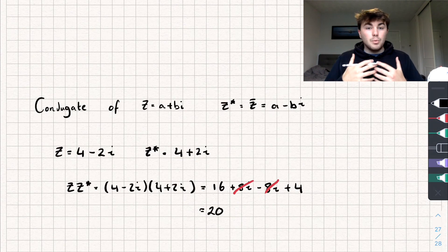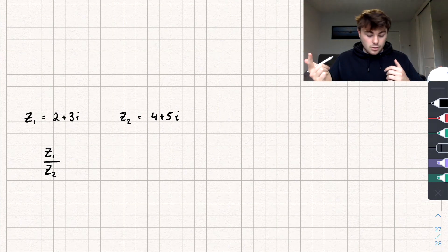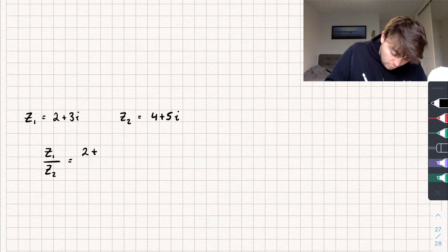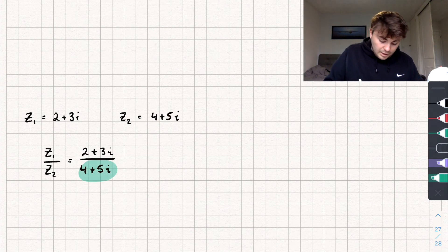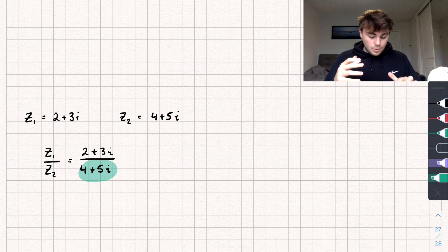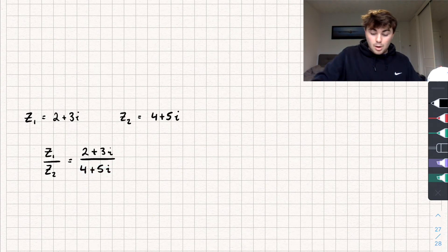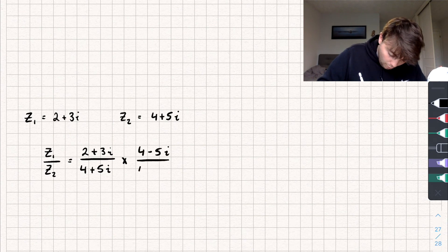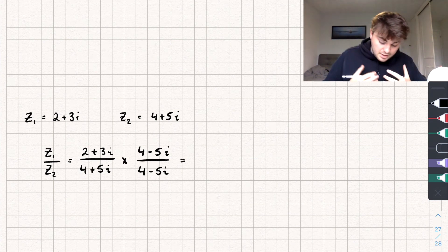This becomes really useful when we want to divide complex numbers. Say we've got z1 divided by z2, which is 2 plus 3i divided by 4 plus 5i. To divide, we want to simplify by getting rid of the imaginary part on the denominator — just like rationalizing the denominator. To do that, we multiply the top and bottom by the conjugate of the denominator, which is 4 minus 5i over 4 minus 5i, since that's just multiplying by 1.